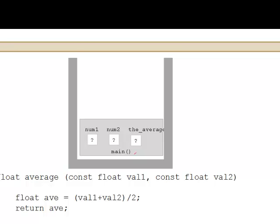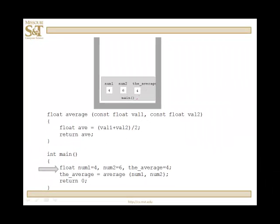We have three variables: num1, num2, and the_average. They come into existence when they're declared, and in this case they're initialized. They have the initial values of 4, 6, and 4.